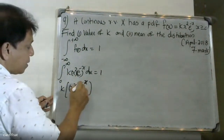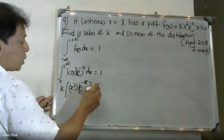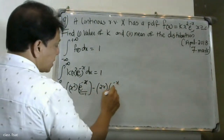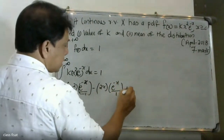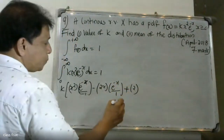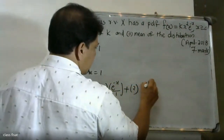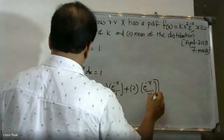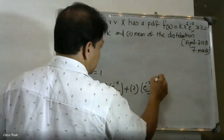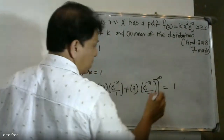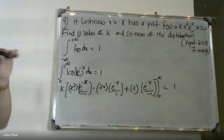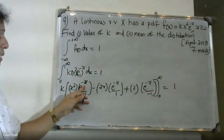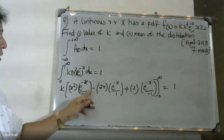Applying integration by parts: x squared times e raised to minus x divided by minus 1, minus the derivative term, plus 2 times e raised to minus x divided by minus 1, continuing the integration by parts process.